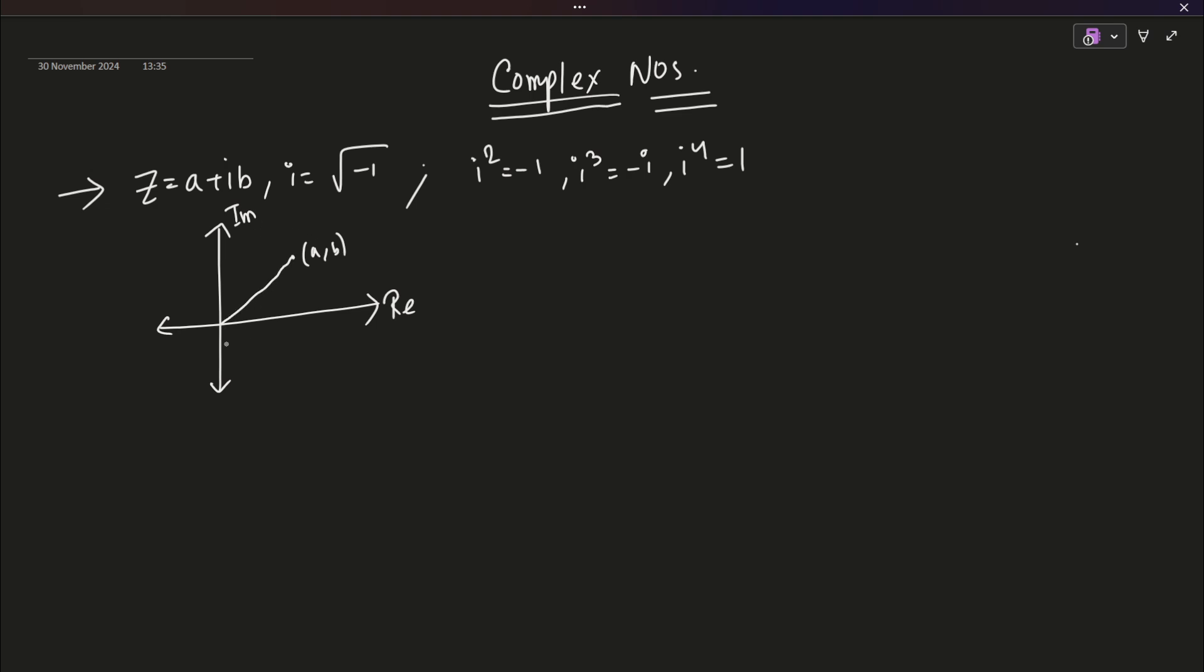The distance from the origin that is O, the point 0, 0, the complex number 0 is called the modulus of the complex number or R. For a complex number Z equals to A plus IB, R is given as root over of A square plus B square and its argument theta is given as tan inverse of B by A, where B is called the imaginary part and A is called the real part.